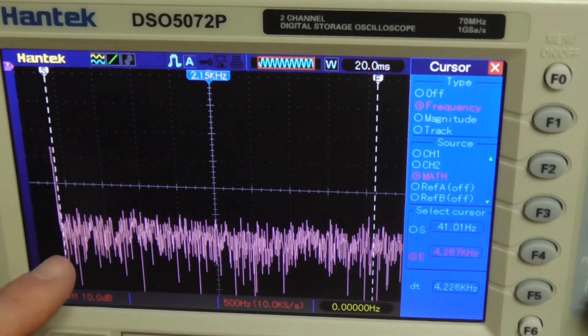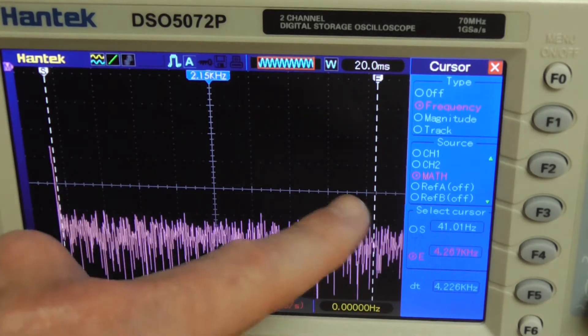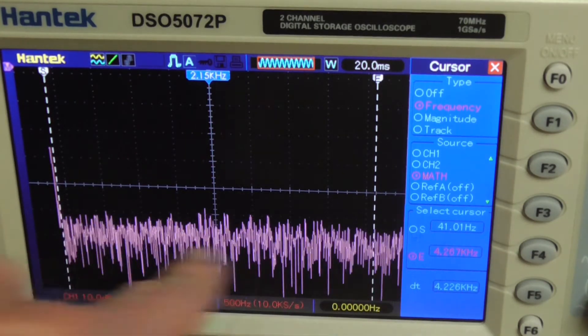So on the left side here, this is 0Hz. We're in FFT mode. This is 0Hz and it looks like the cursor out on this end is running about 4kHz.